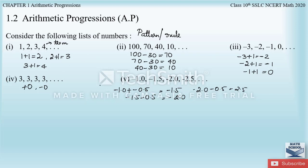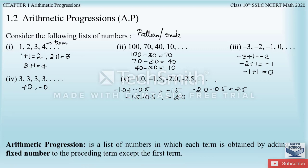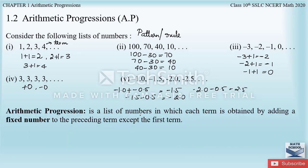From all the above lists of numbers, we observe that the successive terms are obtained by adding a fixed number to the preceding terms. Such a list of numbers is said to form an Arithmetic Progression. The fixed number added is: plus 1 in the first list, minus 30 in the second, plus 1 in the third, 0 in the fourth, and minus 0.5 in the fifth.